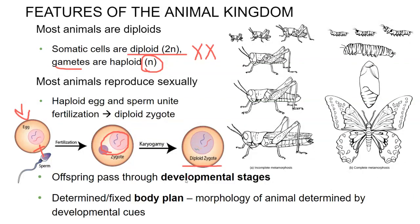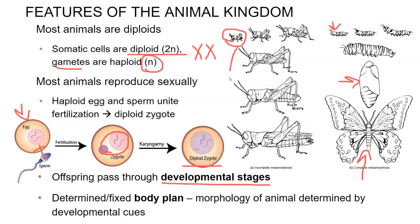When this zygote starts to develop, it will go through specific stages related to the species. For instance, this butterfly goes through several specific stages once it is hatched. The larva looks very different from the pupa, which looks very different from the adult. Whereas something that goes through incomplete metamorphosis — the nymph, the baby — looks almost exactly like a miniature version of the adult. These organisms also will have a fixed body plan, so there will be specific developmental cues that develop certain features.